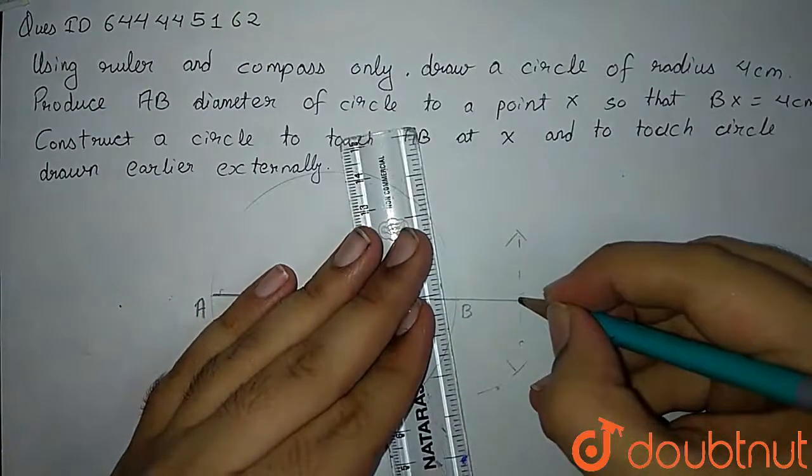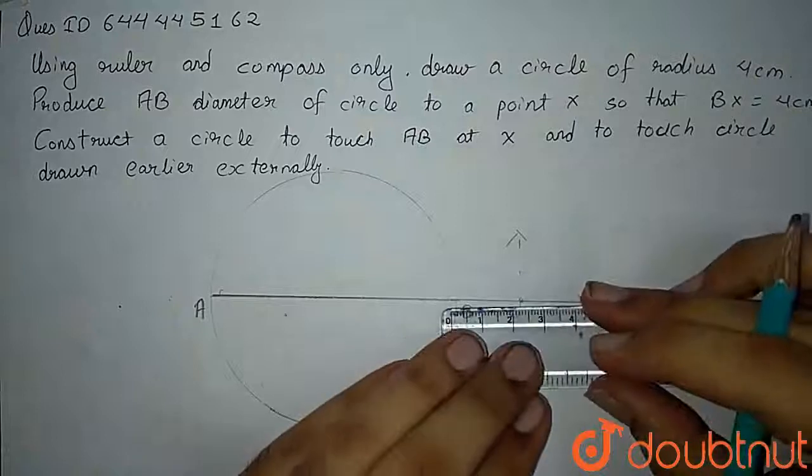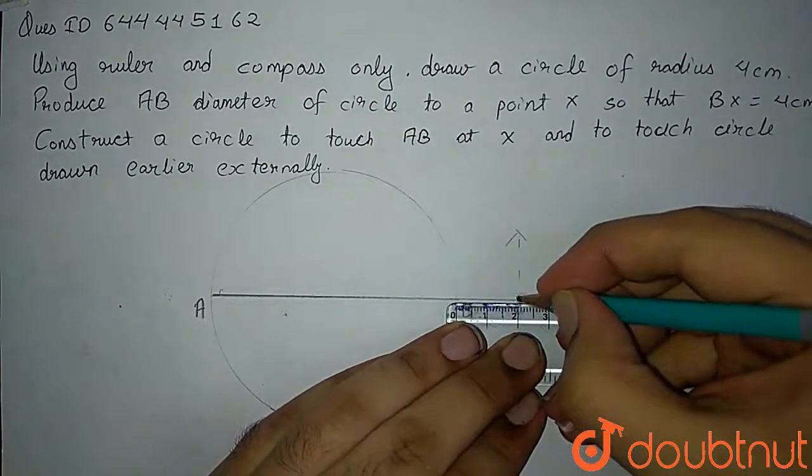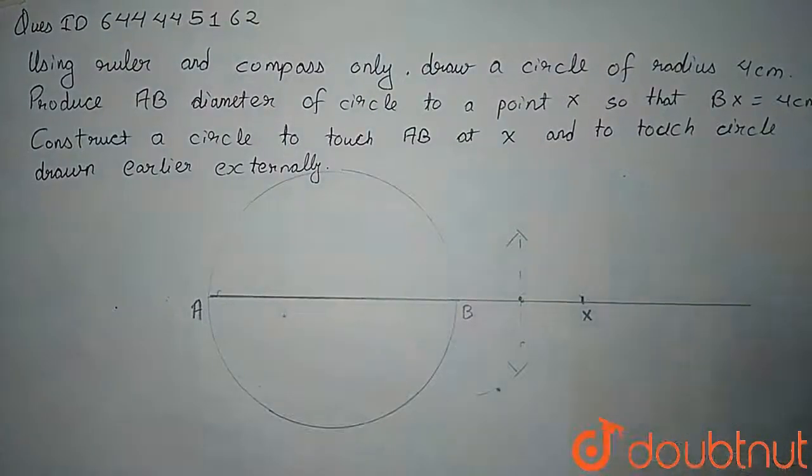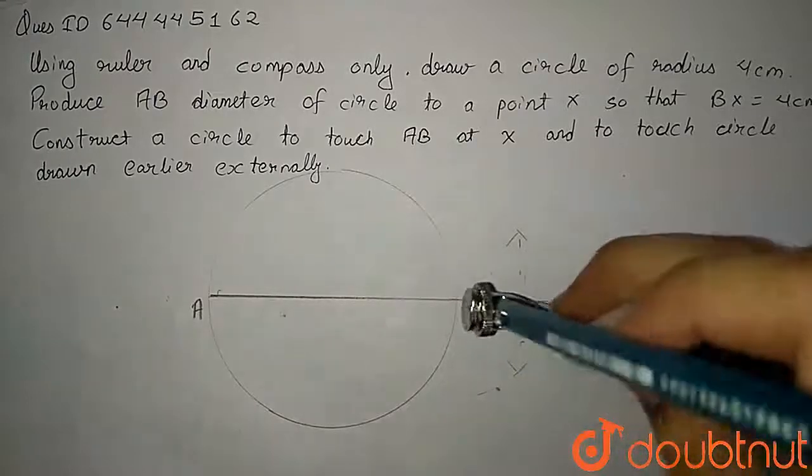To obtain the center point or we can just by using our scale see that the center point is exactly at 2 because BX was 4. So we can draw a circle of 2 centimeters from this point we have got.